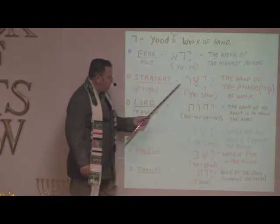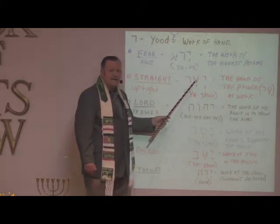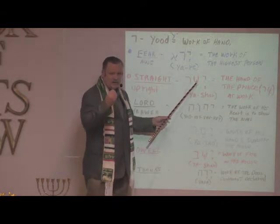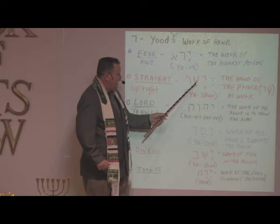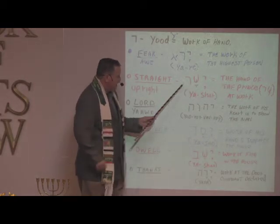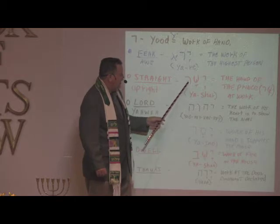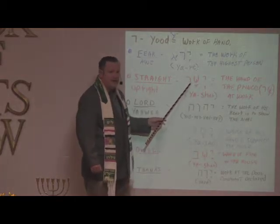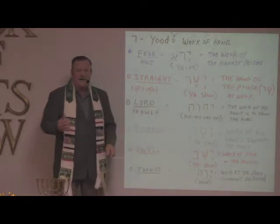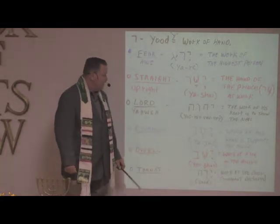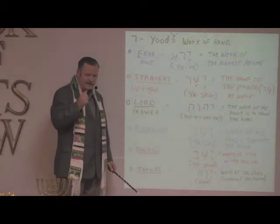The next word means straight or upright. It's made up of three letters: the Yod, the shin — which looks like a W with a dot and means 'to consume with fire' — and the resh, which is 'the highest person.' Together: the work of the hand of the highest person. And if you just take the shin, the A, and the resh, that is the word for prince. So literally, the hand of the prince is at work. How do you know if the hand of the king of glory is at work in your life? Your life will become straight and upright and righteous. That's how you know the work of the hand of the prince is working in you.